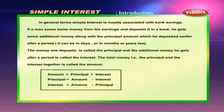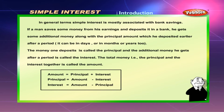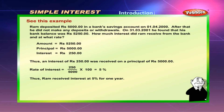The total money — that is, the principal and the interest together — is called the amount. Amount is equal to principal plus interest. Principal is equal to amount minus interest. Interest is equal to amount minus principal.